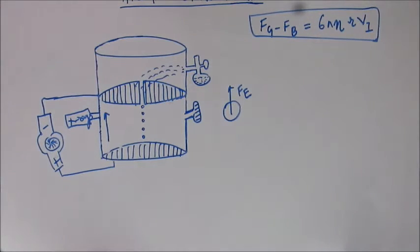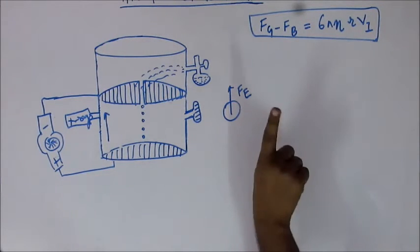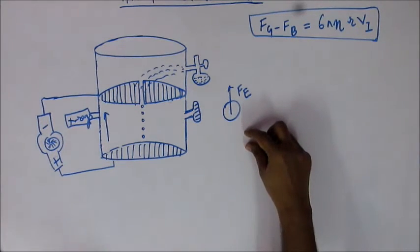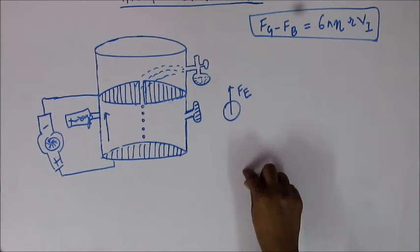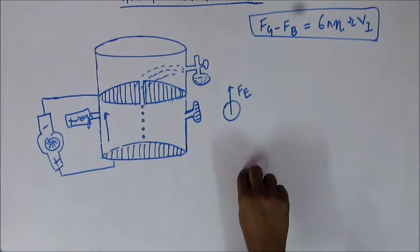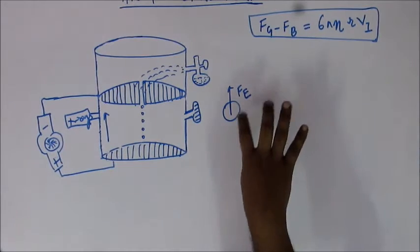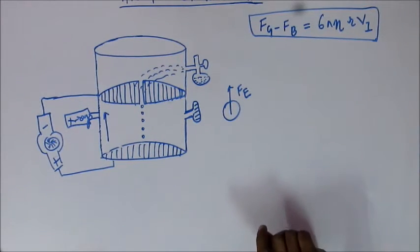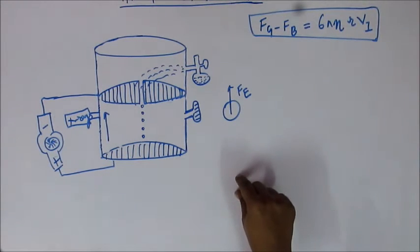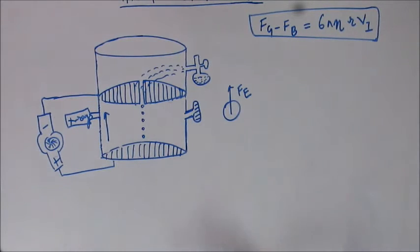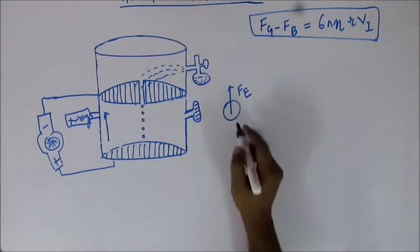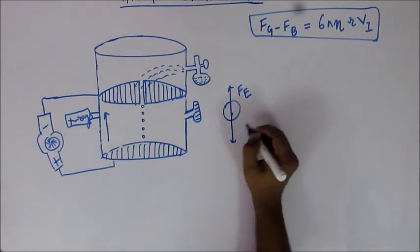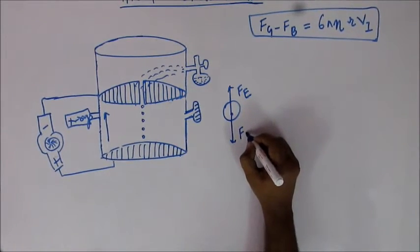What would happen? A body was coming down with a constant velocity, and suddenly there is a net force. If there is a net force, then there will be an acceleration in the upward direction. So the downward velocity will keep on decreasing until it comes to zero. At the moment it comes to zero, if the electric force becomes equal to the other forces already acting, then the oil drop will be suspended in the air at that very position. If we are able to do that, then the electric force must be equal to the forces acting on the oil drop, which will be mg minus Fv.